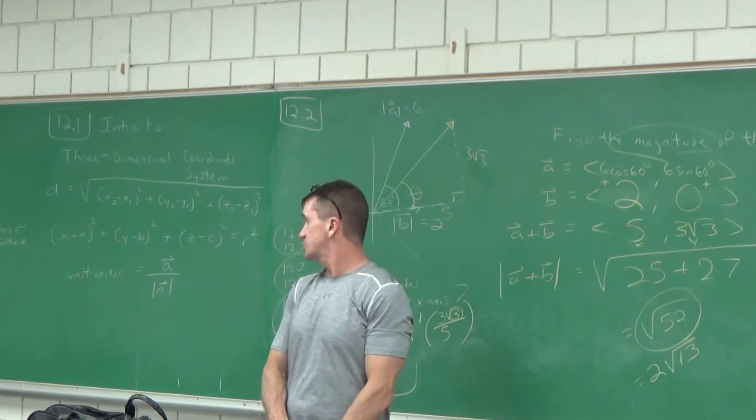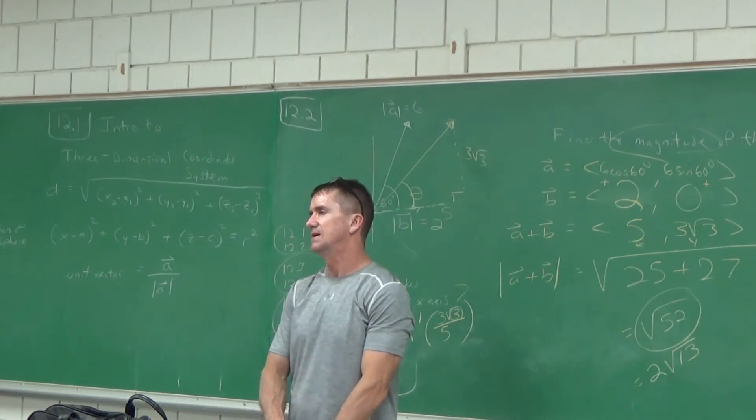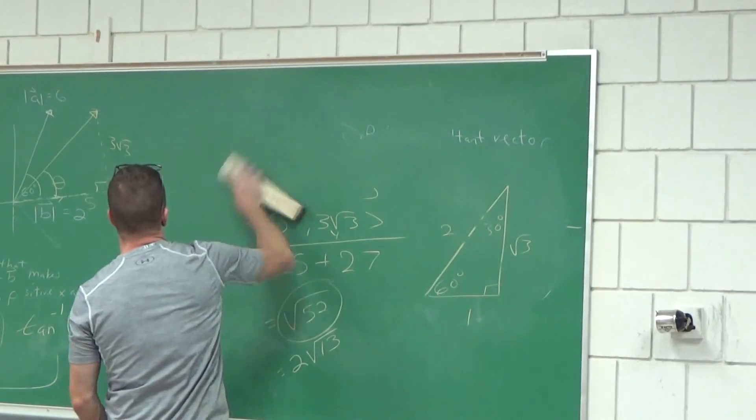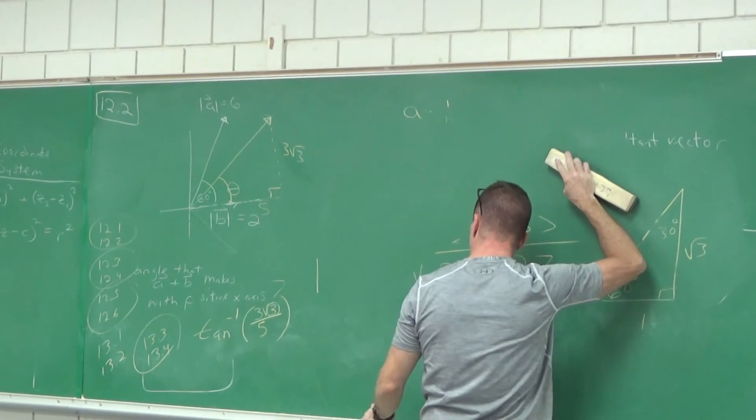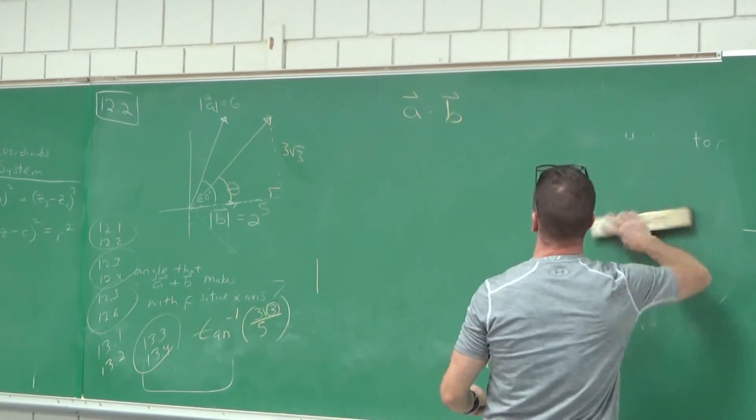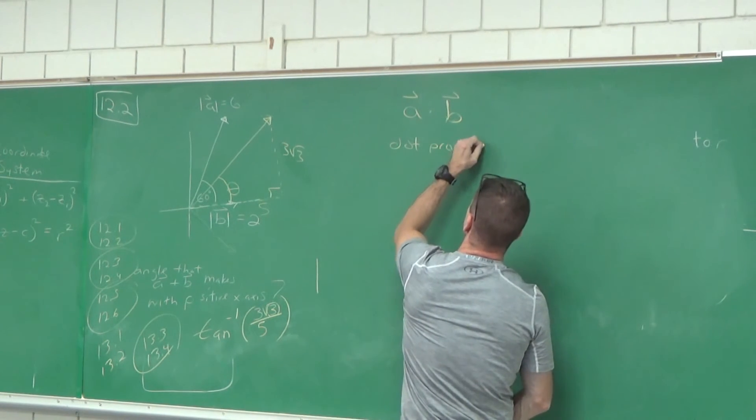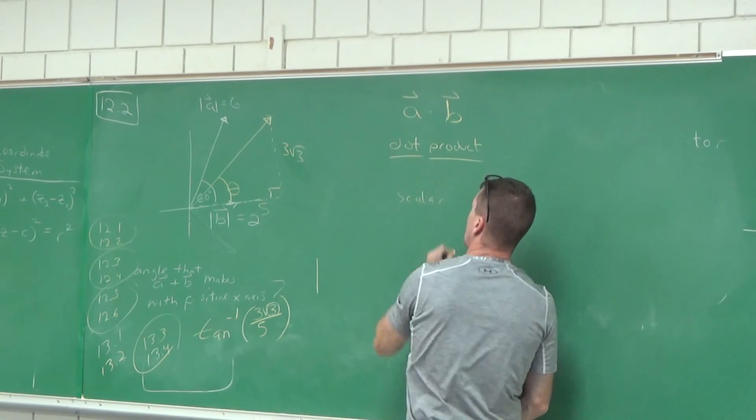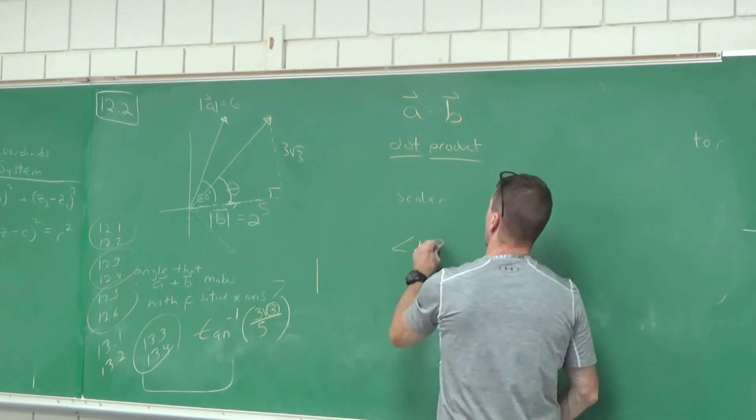Next class, what are we doing? We'll be starting section 12.3, and it's on the dot product. Has anybody ever heard of that before? I'll start here. This is huge. So I just want to talk about the dot product. If you gotta find the dot product between two vectors, and don't worry, we'll do this next class, but I just want to introduce it before you break apart here. The dot product of two vectors, A and B.